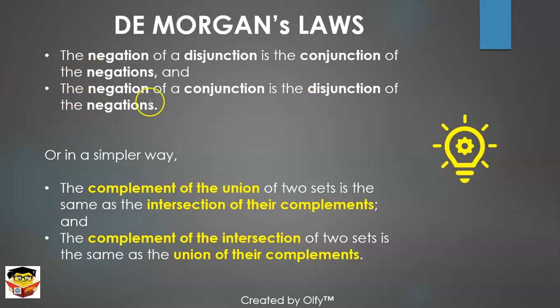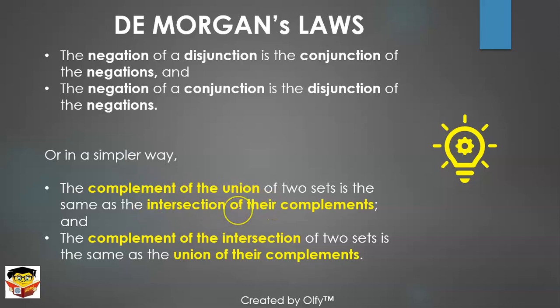To simplify, the first law can be rewritten as: the complement of the union of two sets is the same as the intersection of their complements. The second law can be rewritten as: the complement of the intersection of two sets is the same as the union of the complements.